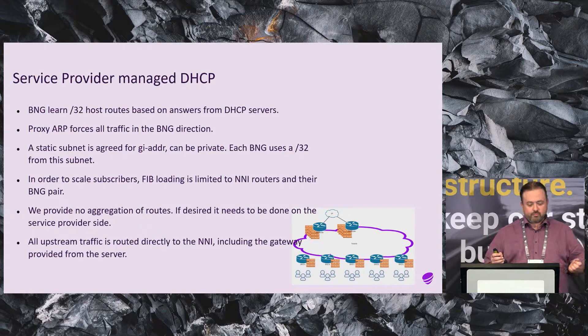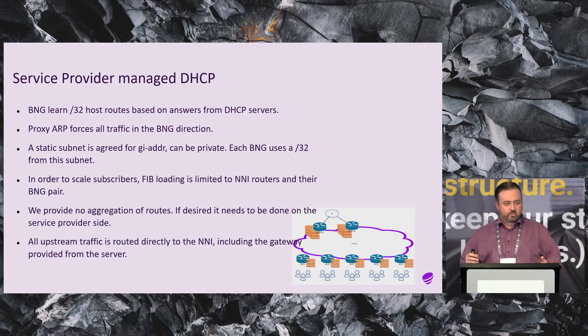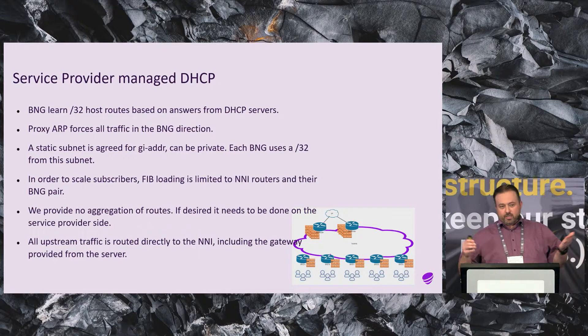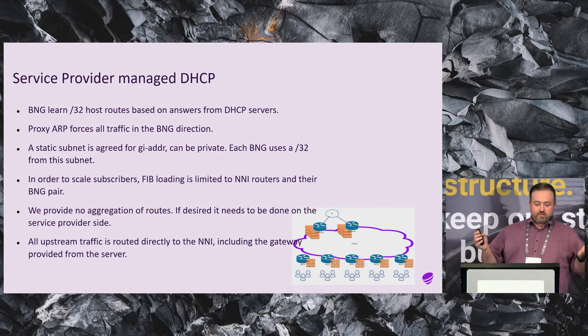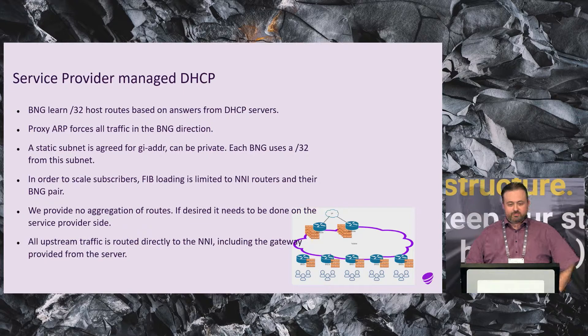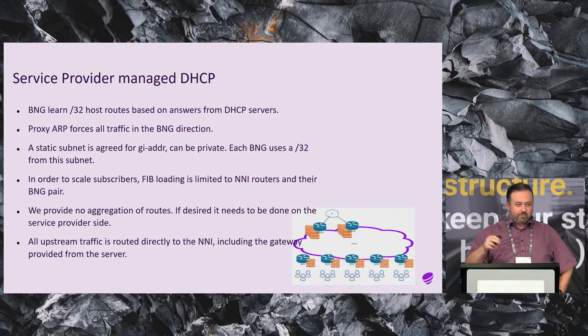That was also a requirement from some service providers - if they want to do filtering on what ports customers can and cannot use, there can't be any local routing in the KO network. This also means there is no default gateway in the KO network, so if the customer looks up their IP address and pings the default gateway, it doesn't actually exist within the KO network. But service providers are free to set up a loopback somewhere so subscribers can ping something. If you are really short on IP addresses, you can even reuse that default gateway across customers - they will just ping each other.